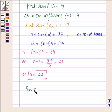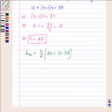So now S_n is n upon 2 into 2a plus n minus 1 into d. So to find the sum of 22 terms, we have S_22 is equal to 22 upon 2 into 2 into a, which is first term 13, plus 22 minus 1 into the common difference which is 4.